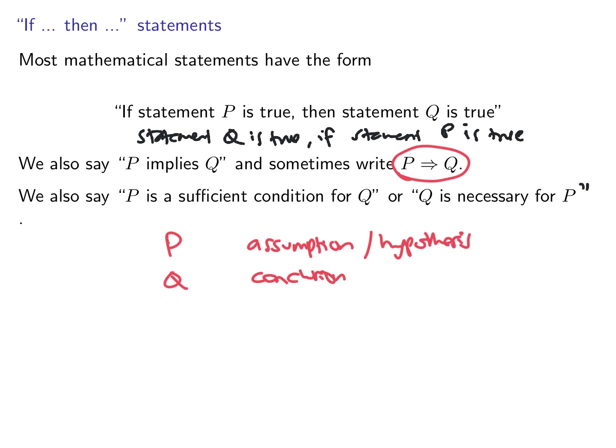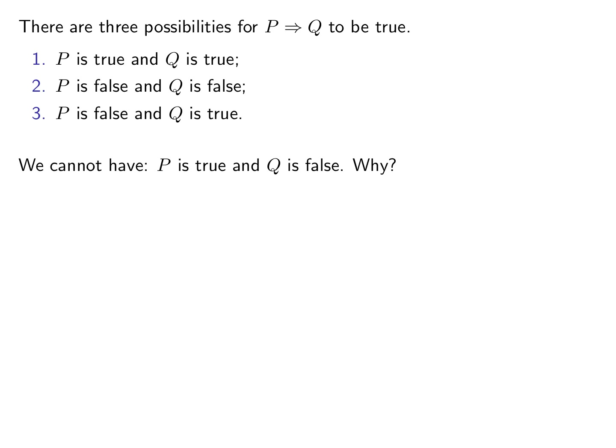P implies Q means that if the assumption P is true, then the conclusion Q is true. Here's the main idea of implication: P implies Q says nothing about the truth values of P or Q. There are three possibilities for P implies Q to be true. P is true and Q is true; P is false and Q is false; and lastly, P is false and Q is true.